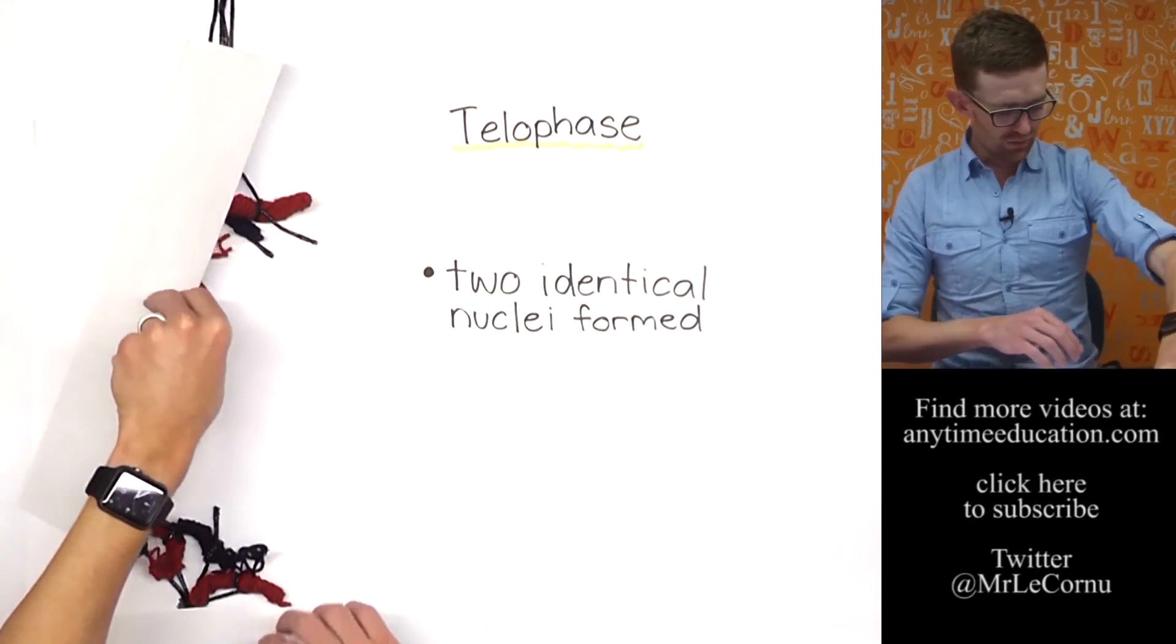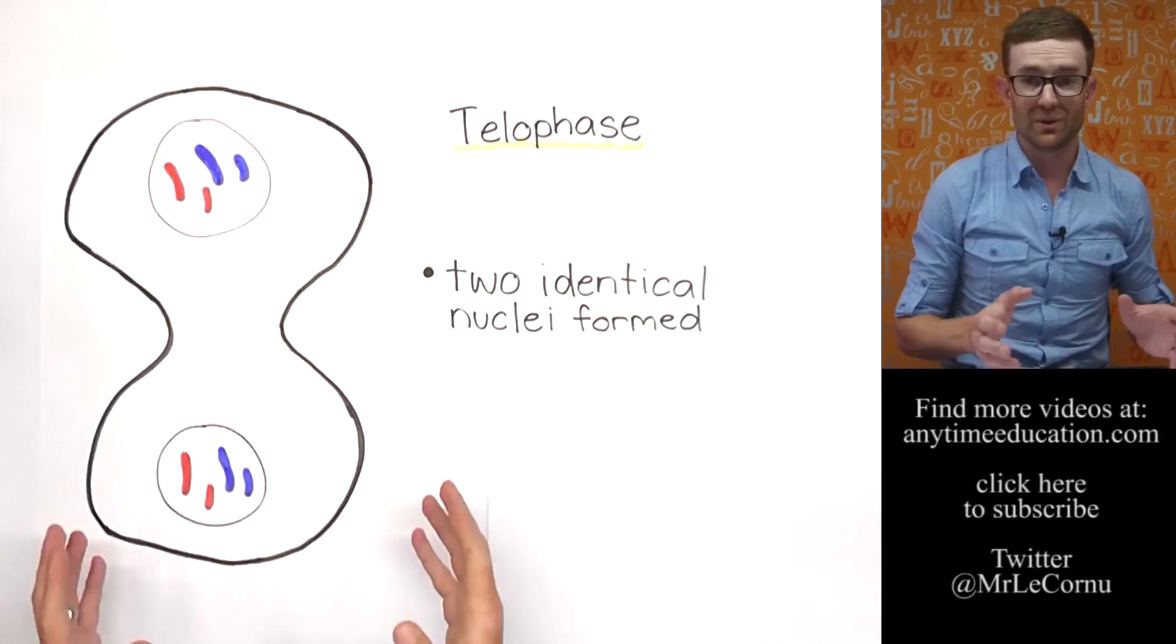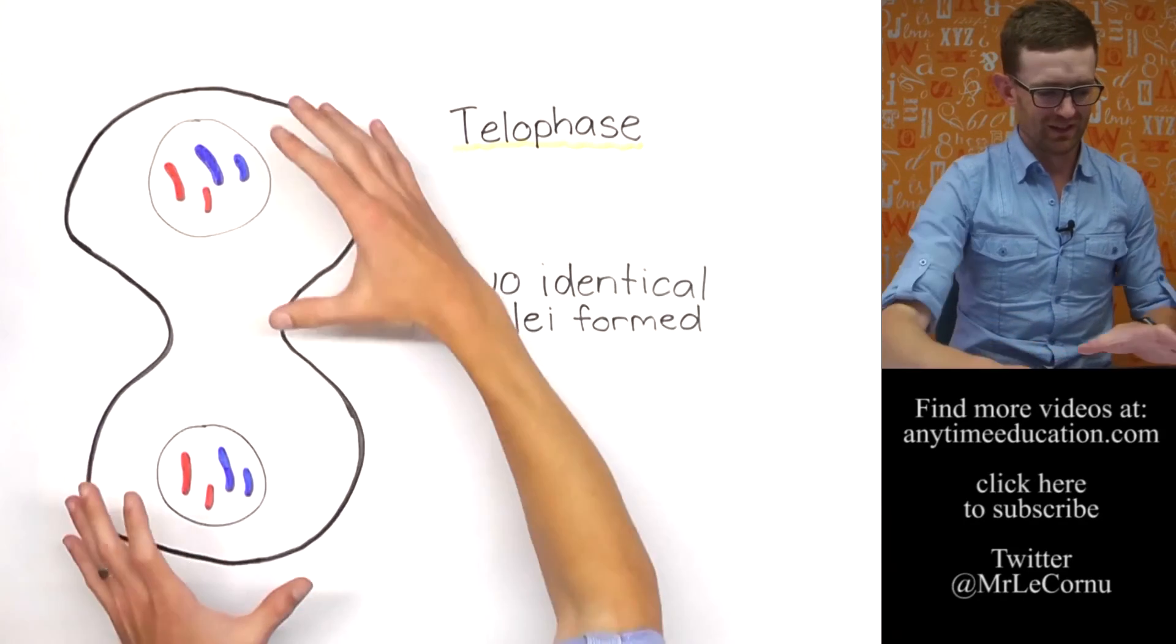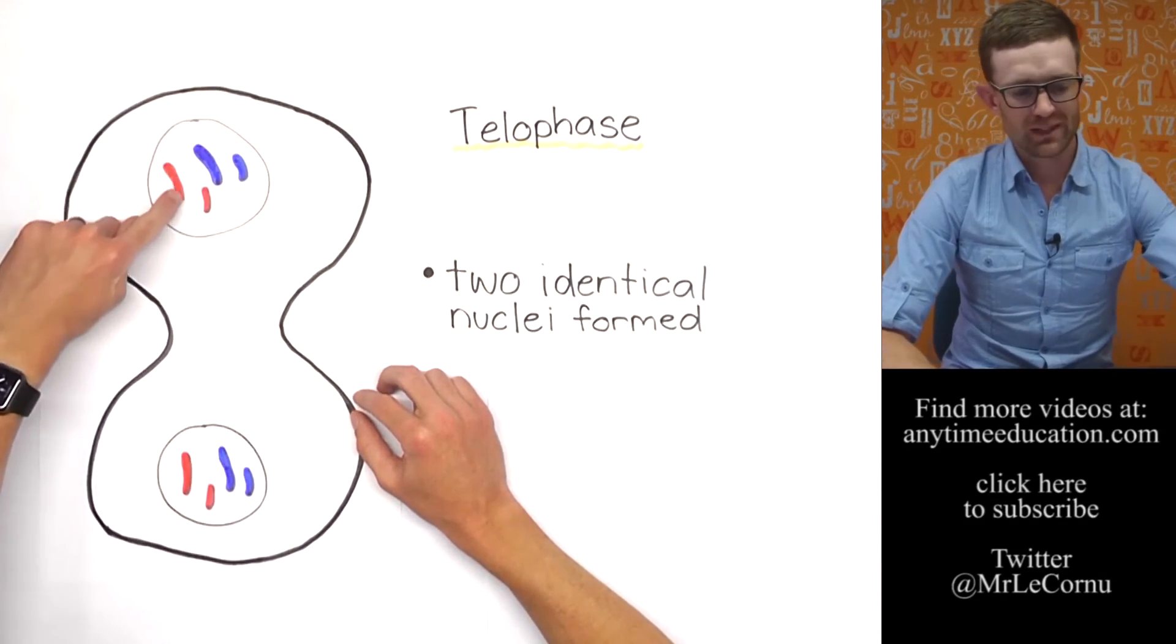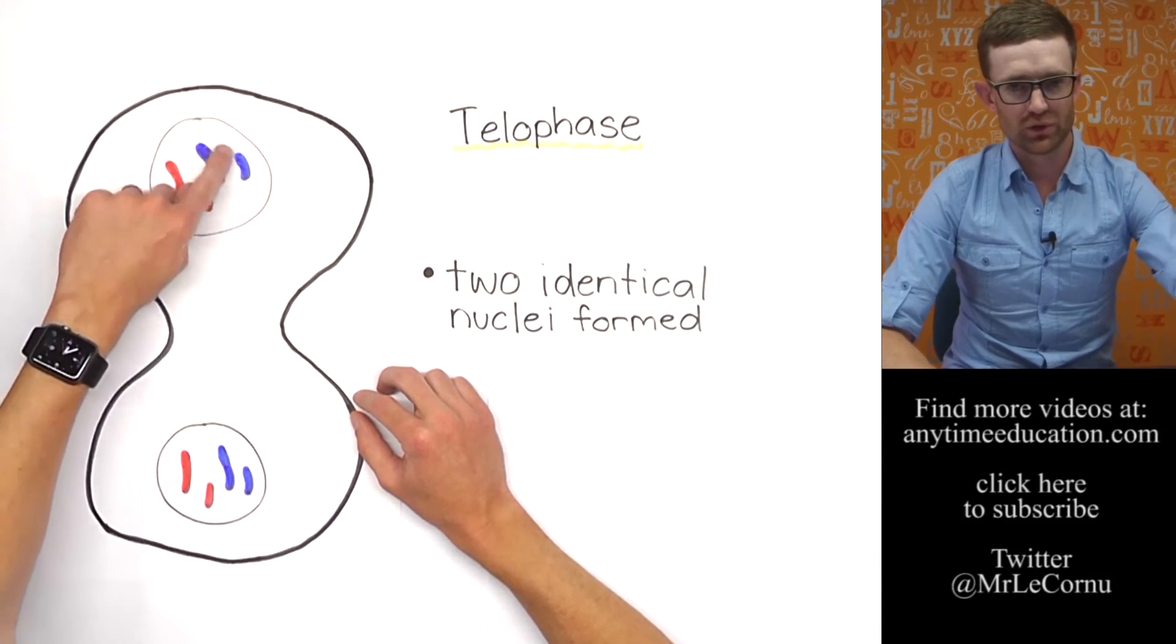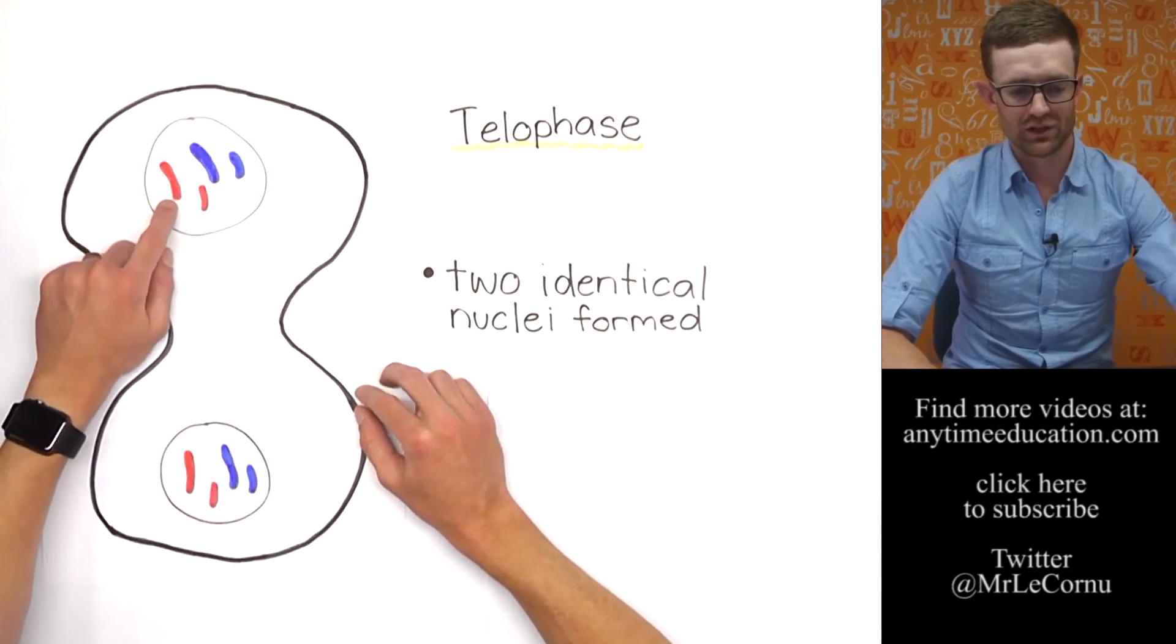If we get rid of this, we'll have a look at what that looks like. There we go, that's a bit neater. Right, here's our cell, two nuclei. Big red, big blue, little red, little blue, four chromosomes in that nucleus.